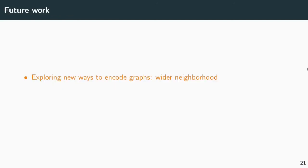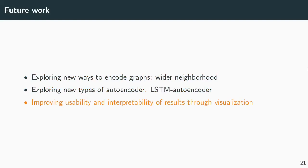As future work, we consider three types of development. First, we wish to explore new ways of encoding graphs with deep learning algorithms. We also want to explore new types of autoencoders, like the LSTM autoencoder. Finally, we also want to improve the usability and the interpretability of the results for the analysts by proposing visualizations.